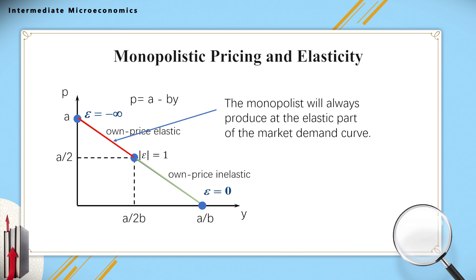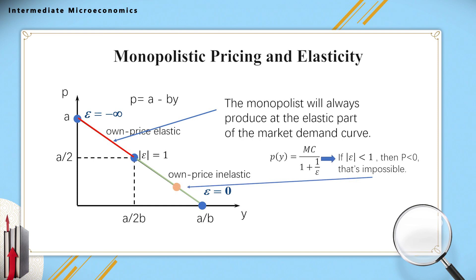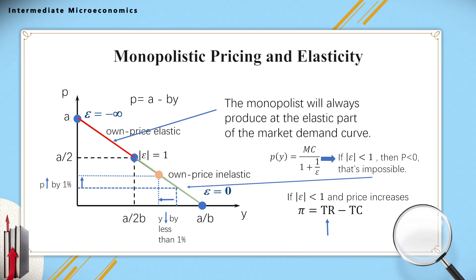If the monopolist produces at an output level where the demand is inelastic — that is, epsilon is greater than minus 1 but still negative — then assuming marginal cost is positive, the price would be a negative number, which is obviously impossible. The economic intuition is: if the monopoly produces where demand is inelastic, increasing the price by 1% could lead to higher total revenue because demand decreases by less than 1%. Meanwhile, since increasing price leads to production decrease, total cost must decrease. So profit is not maximized and can be increased by raising price and decreasing output.